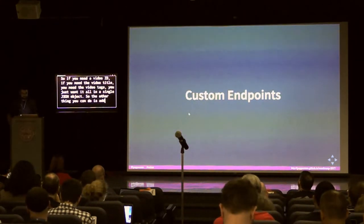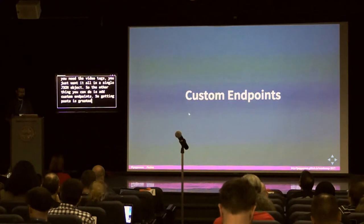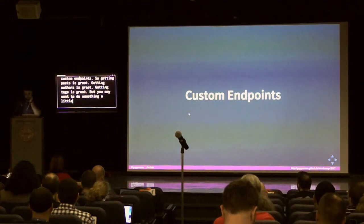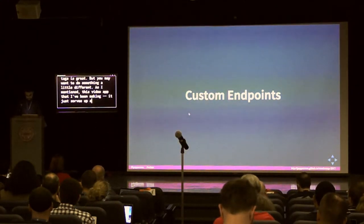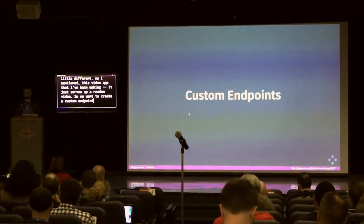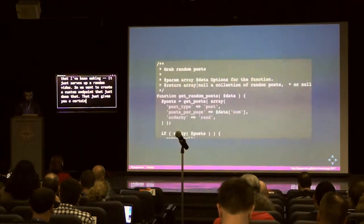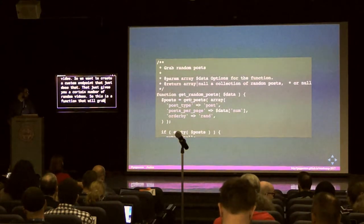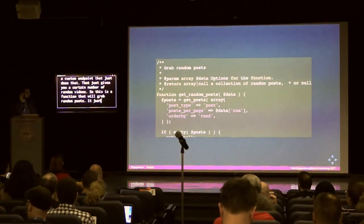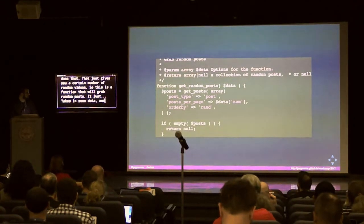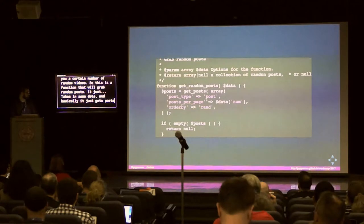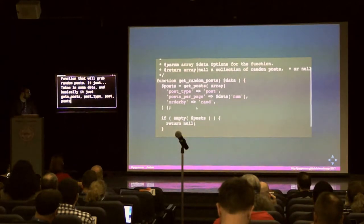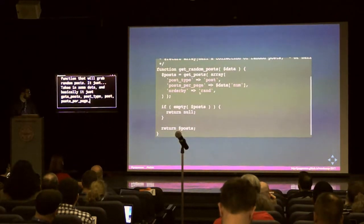The other thing you can do is add custom endpoints. Getting posts, authors, and tags is great, but you might want something different. As I mentioned, this video app just serves up a random video, so I want a custom endpoint that does exactly that — giving you a certain number of random videos. Here's a function that grabs random posts. It takes in some data and uses get_posts with post type 'post', posts_per_page from the data parameter, defaulting to 20, and orderby 'random'.